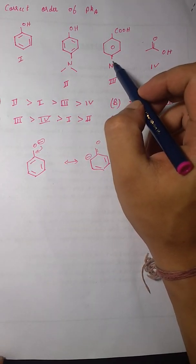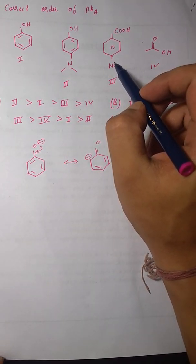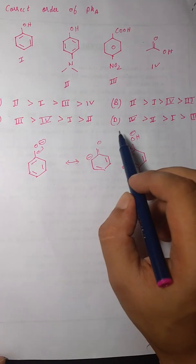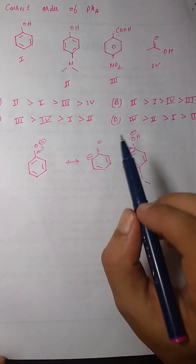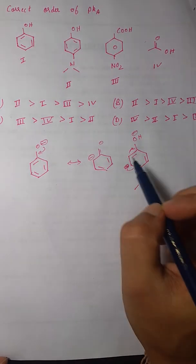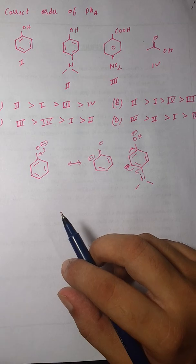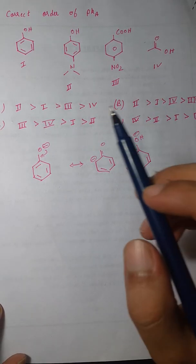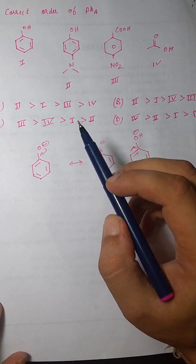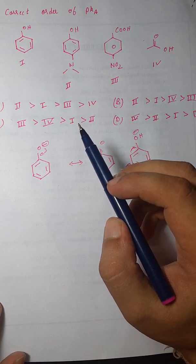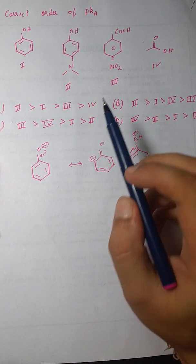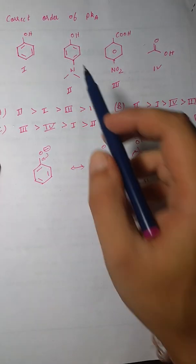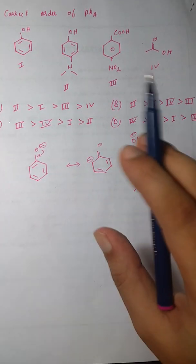The four compounds are: phenol, para-nitro benzoic acid, acetic acid, and a fourth compound. These are the four given options — just ignore the options for now. pKa basically measures acidity, so the higher the acidity of a compound, the lower the pKa value. Just remember: higher acidity equals lower pKa.